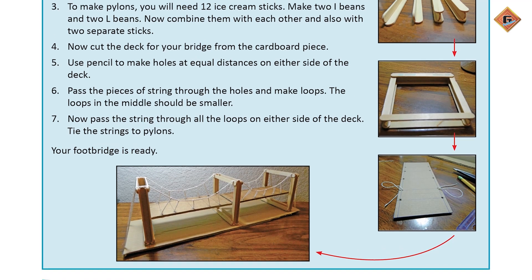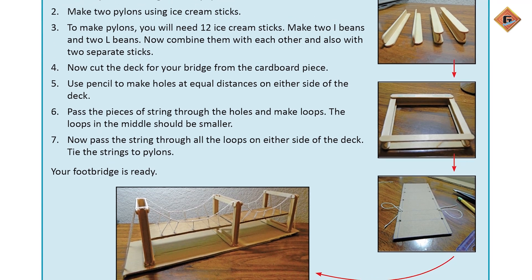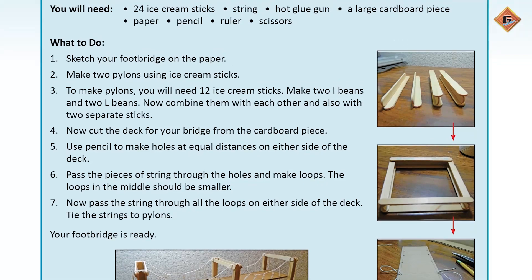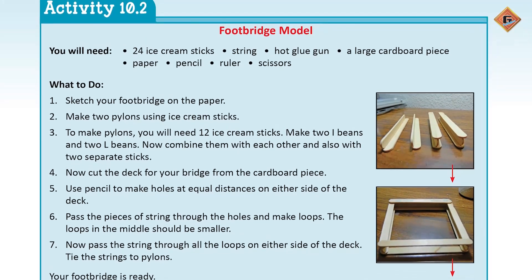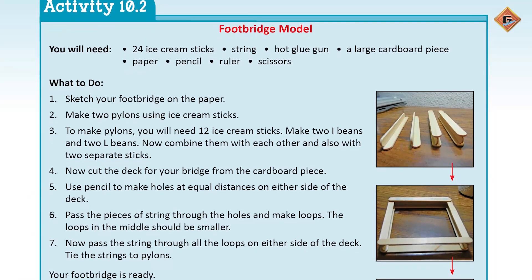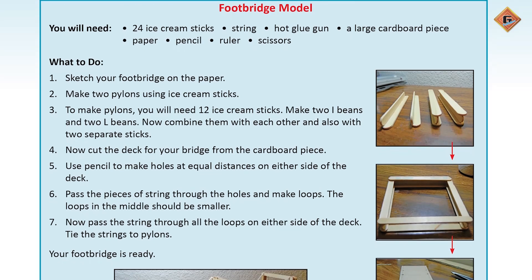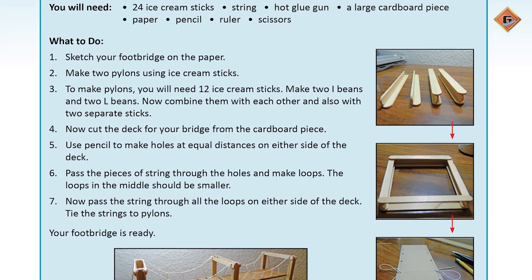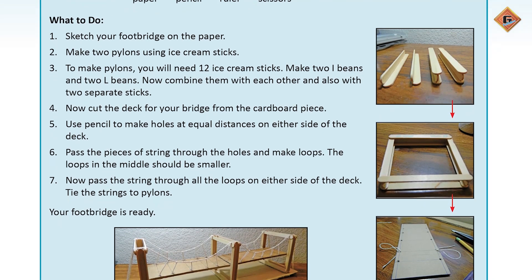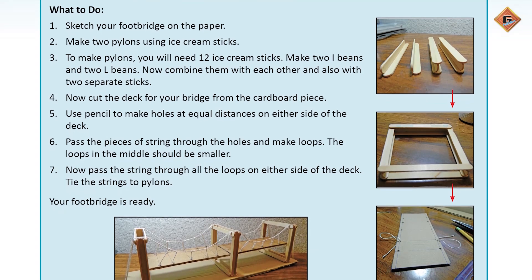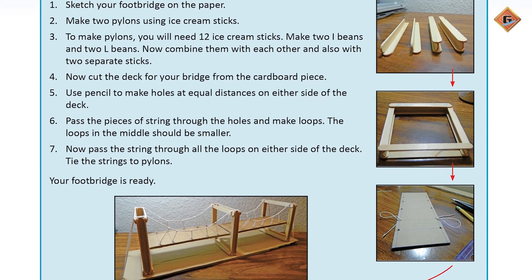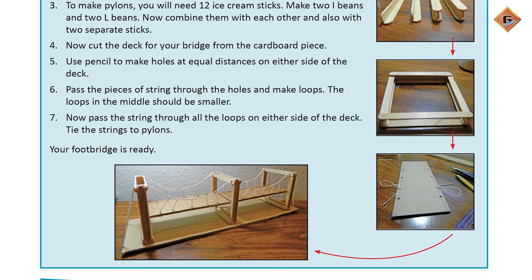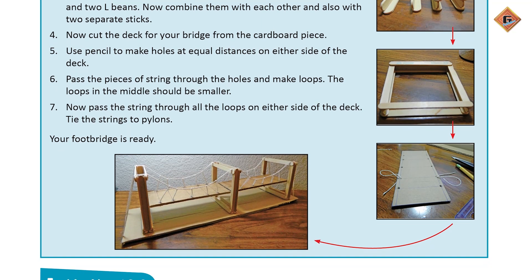Footbridge model ke liye aap istemal karenge: 24 ice cream sticks, string, hot glue gun, a large cardboard piece, paper, pencil, ruler, aur scissors. In sab ko yahan add karna hai aur isko banane ka tarika apni book ke page ki madad se write down karna hai aur notes bana lene hain.